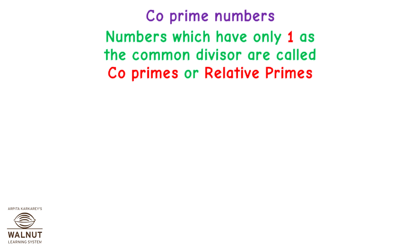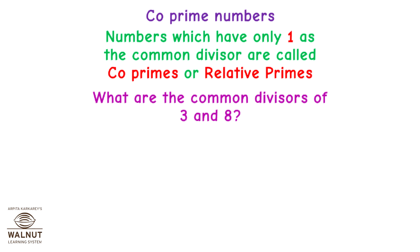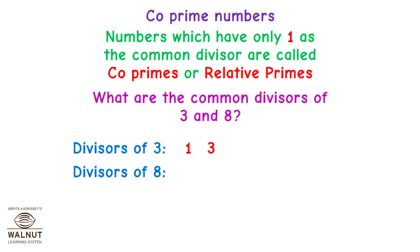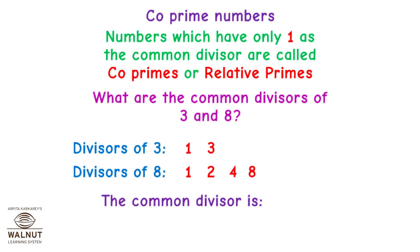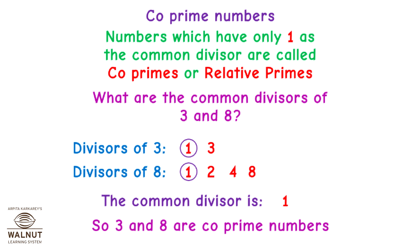Co-Prime Numbers. Numbers which have only 1 as the common divisor are called co-primes or relative primes. What are the common divisors of 3 and 8? Divisors of 3 are 1 and 3. Divisors of 8 are 1, 2, 4 and 8. The common divisor is 1. So 3 and 8 are co-prime numbers.